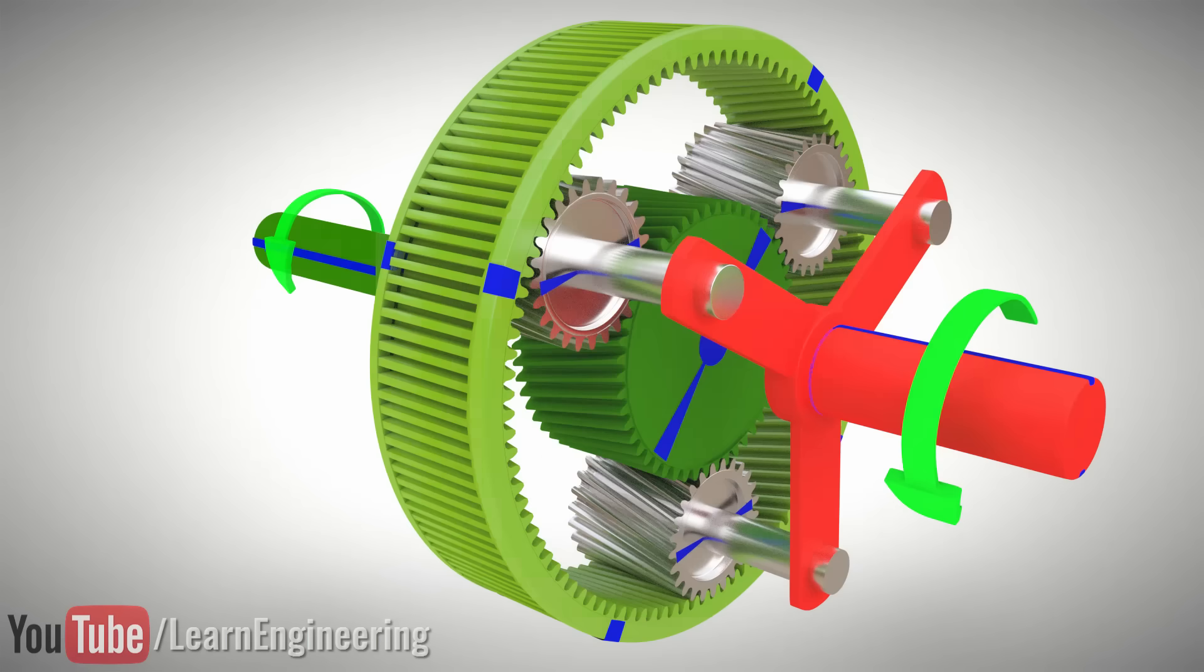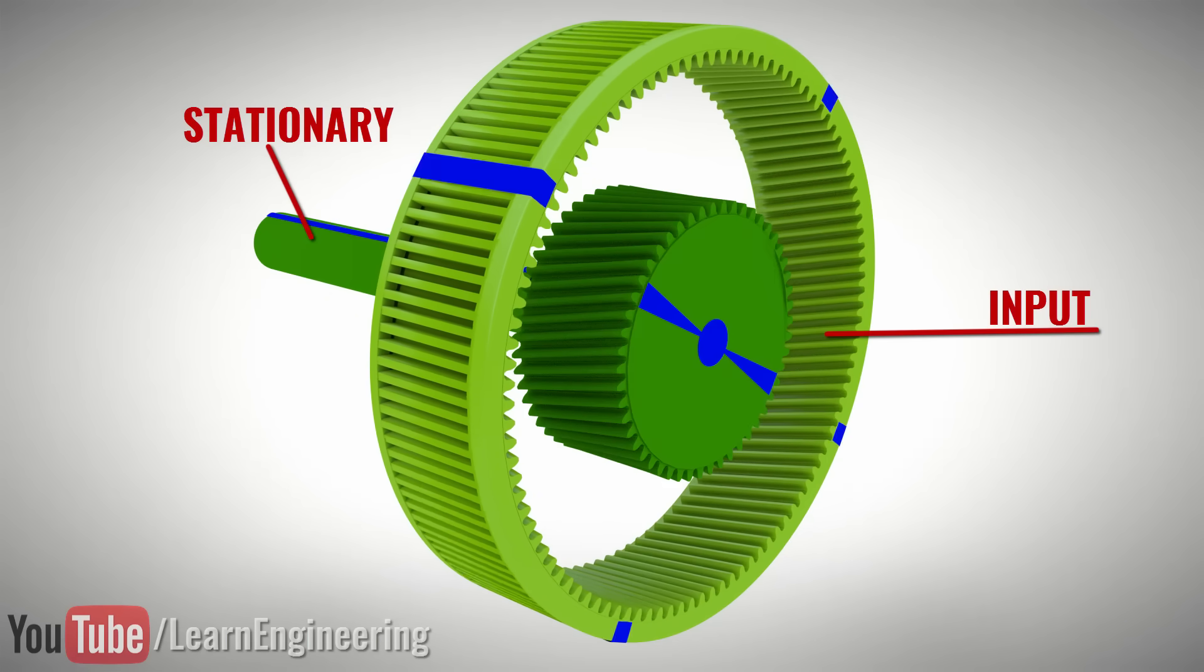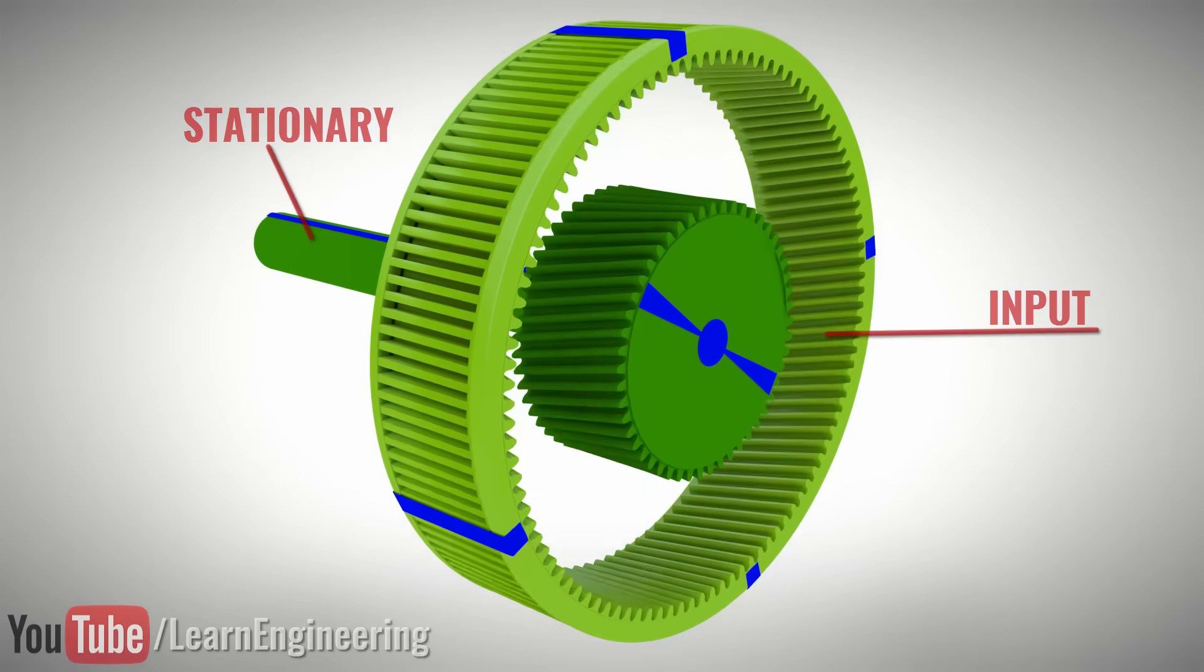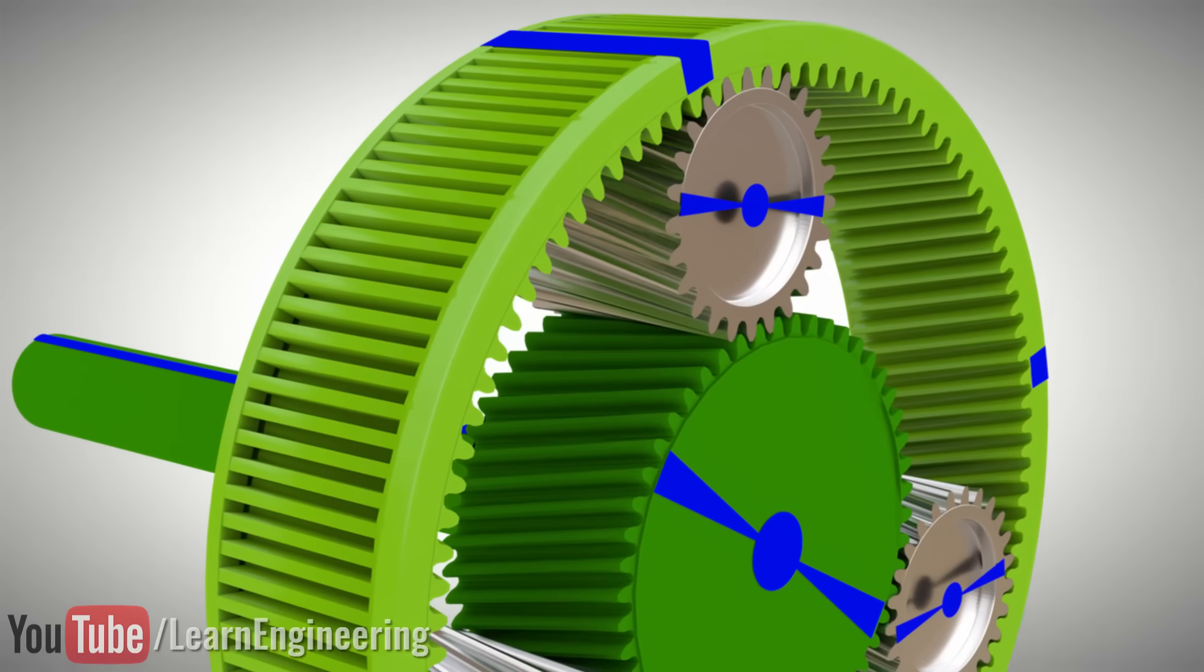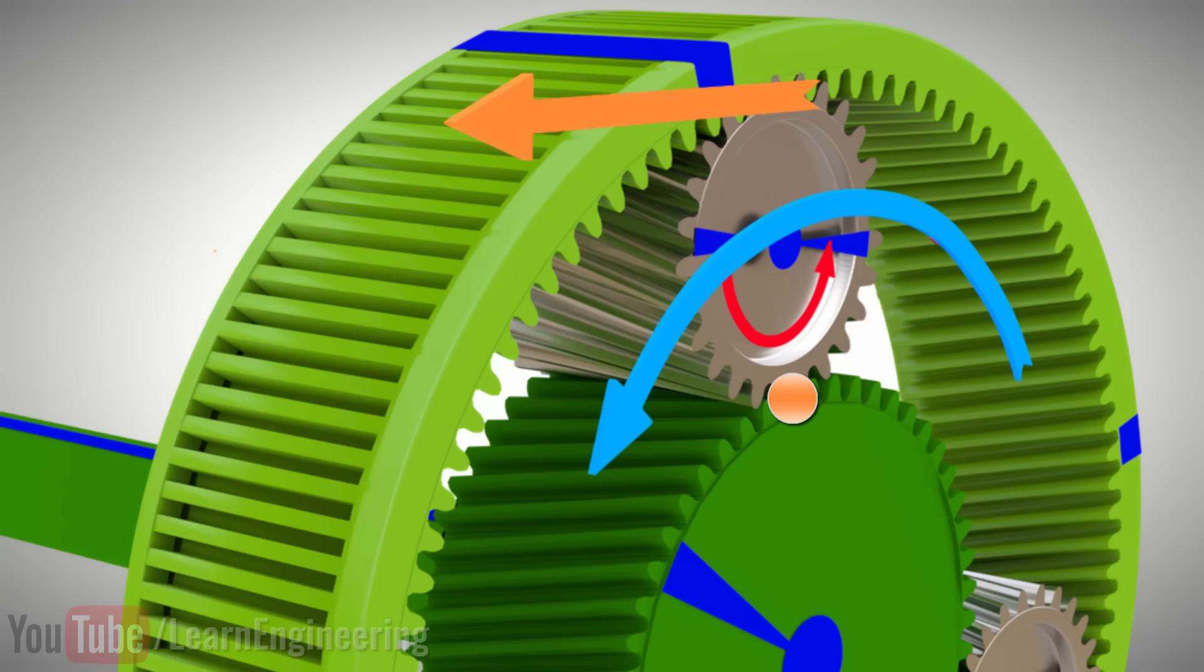Now, let's see what happens when the sun gear is held stationary and the ring gear is rotated. This is the exact opposite to the previous case. At the inner point of the planet gear, the velocity should be zero, and the outer point should have the speed of the ring gear. In this case, the planetary spin will reverse in order to satisfy the speed conditions.